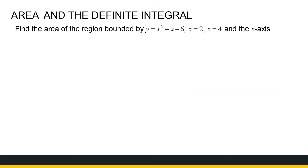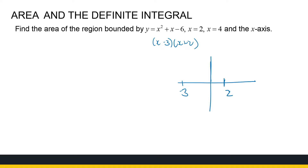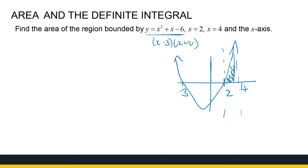Let's look at the next one — there's a lot of information here. The area bounded by y equal to x squared plus x minus 6, x equal to 2, x equal to 4, and the x-axis. If you don't have a sketch, you don't quite know what's going on. If I sketch x squared plus x minus 6, factorizing gives x minus 3 times x plus 2, so it cuts at minus 3 and at 2. The turning point isn't really important. I want the area between x equal to 2 and x equal to 4, under the curve, between the curve and the x-axis.